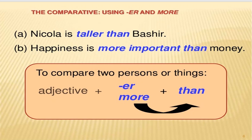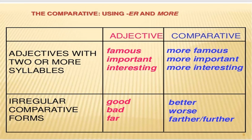To compare two persons or things: adjective plus -er or more, then 'than.' Müqayisə dərəcəsini düzələrkən tək hecalılarda -er, çox hecalılarda 'more' əlavə olunur, sonra than — nə ilə müqayisə edirik. Adjectives with two or more syllables: famous → more famous, important → more important, interesting → more interesting. Yəni müqayisə dərəcəsində gördük ki, 'more' sözü əlavə olunur sifətin qarşısına.